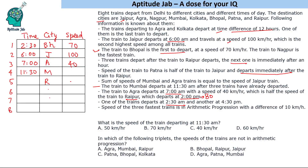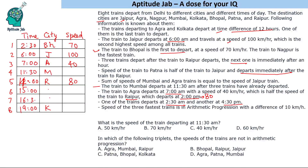Raipur departs at 2 PM with a speed of 80 kilometers per hour. Three trains depart after Raipur, and the next train is exactly one hour later, so the next train is at 3 PM. Agra and Kolkata depart at a difference of 12 hours; since Agra is at 7 AM, Kolkata departs at 7 PM and is the last train. Another time given is 4:30 PM, so all times are now filled.